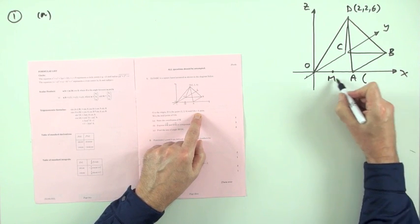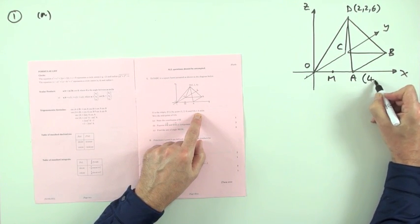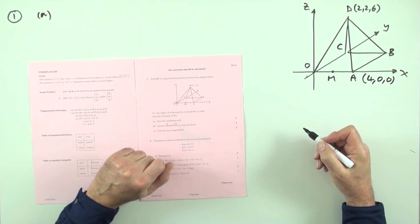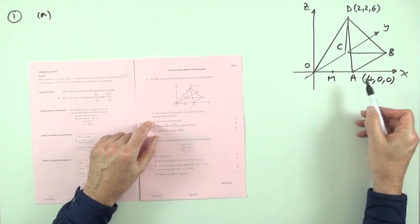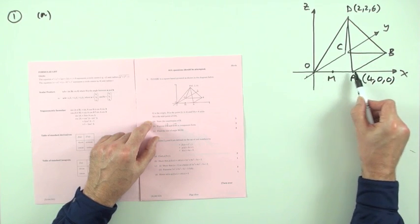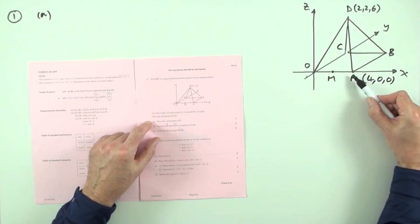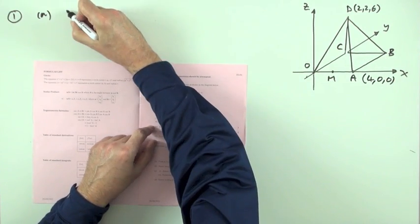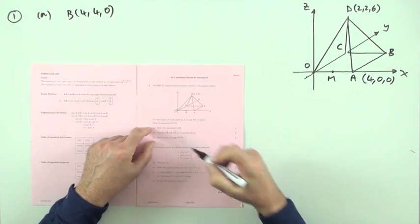So I could put its coordinates down. To get from the origin to A, you'd go four along, then none back, none up. And the question says, what's the coordinates of B? Well, following the same pattern, if it's a square, all the sides are four, it must be four along, four back, and none up. So B is the point four, four, zero.